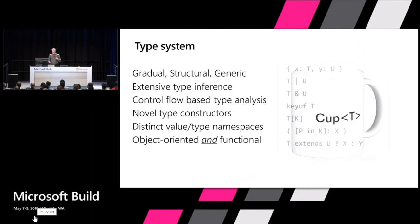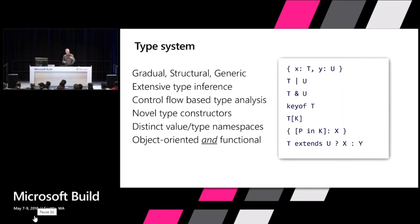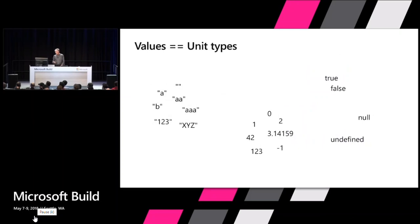I wanted to talk a little bit about some of the things that make the types themselves novel and interesting — the novel type constructors. You're all familiar with one of the basic type constructors, which is object types like x colon T and y colon U. But over time we have added more type constructors: union types, intersection types, index access types, and so forth. At the very bottom of JavaScript and TypeScript we have values, and that's where JavaScript's runtime dynamic type system and TypeScript's static type system meet.